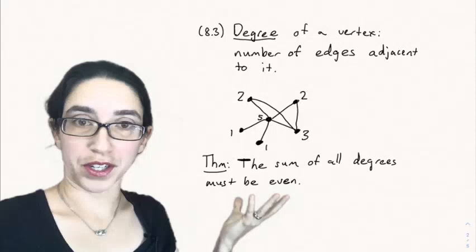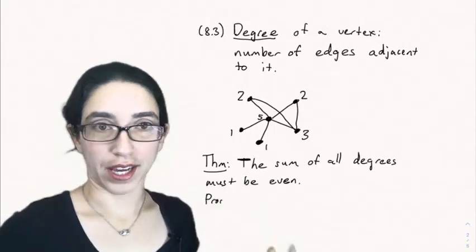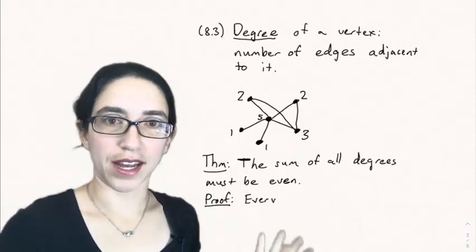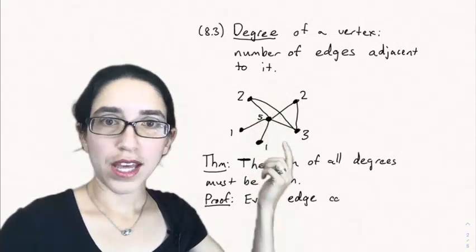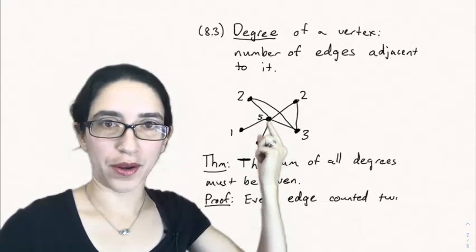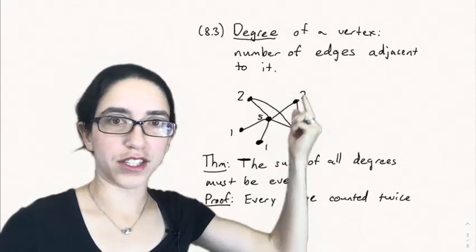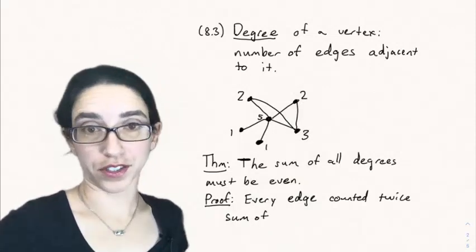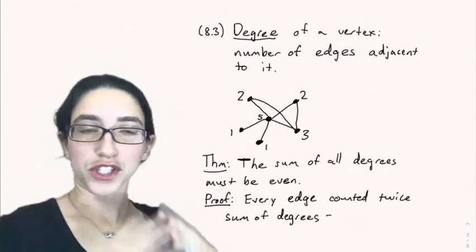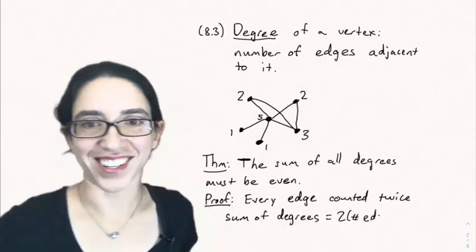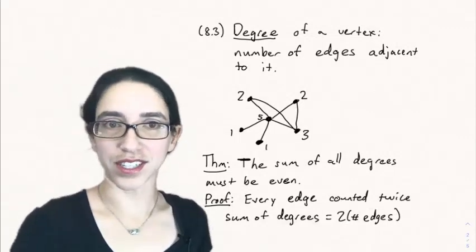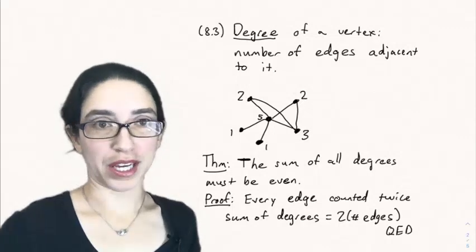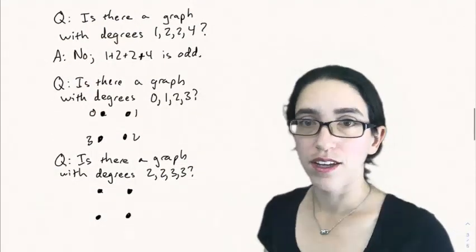Now the main theorem we want to know about degrees is that the sum of all the degrees of the vertices in any graph must be even. And the reason is that when you add up all the degrees, each degree corresponds to counting all the edges coming out of it and each edge is counted by two of the vertices, its two end points, so each edge is counted twice when we add up all these degrees. So the sum of the degrees is equal to twice the number of edges and twice anything is even. That's the definition of even, is that it's divisible by two. So we have proven that the sum of the degrees of a graph must be even and we can use this to eliminate certain graphs.